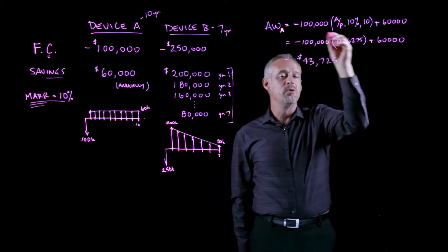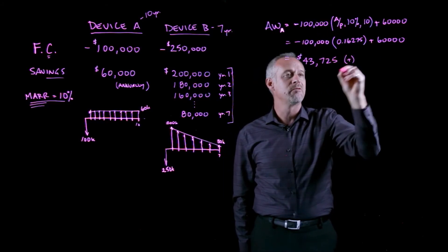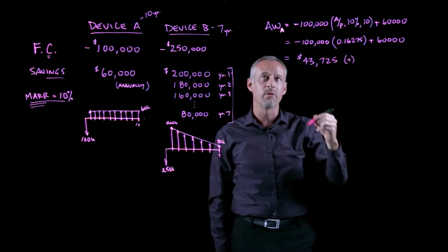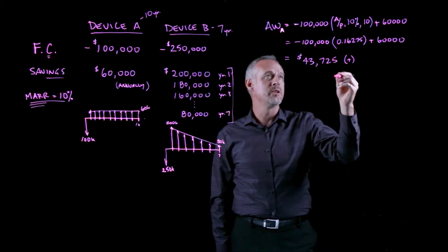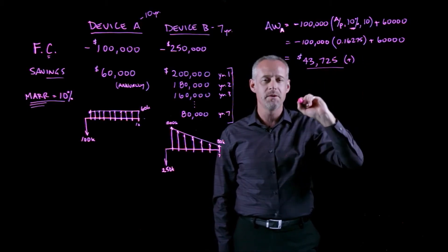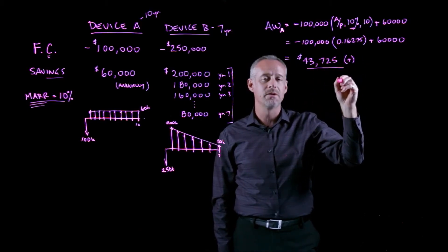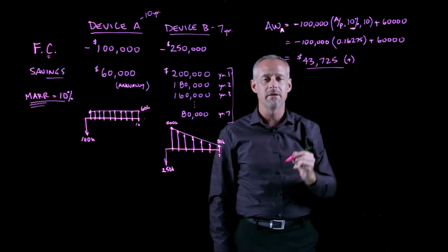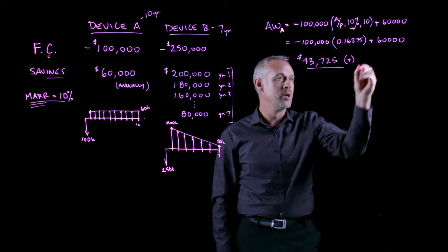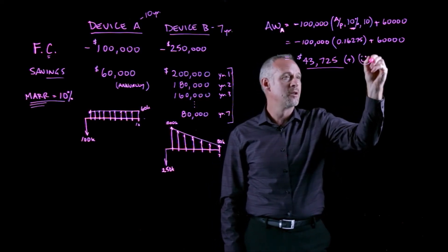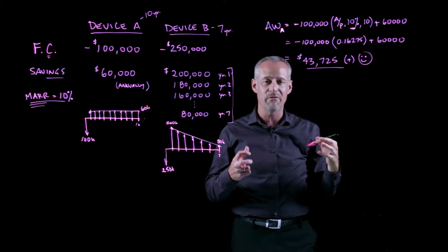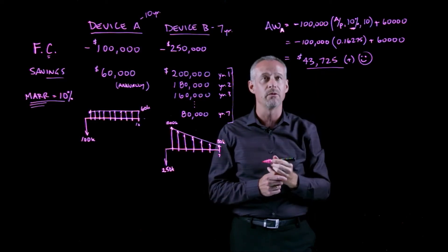This is in fact a positive number. When we calculate a present worth or annual worth using the company's MARR and get a positive result, that means the project at least returns that target minimum interest rate. A positive annual worth is a good thing — it means the net benefit of the project every year is equivalent to about $43,725.